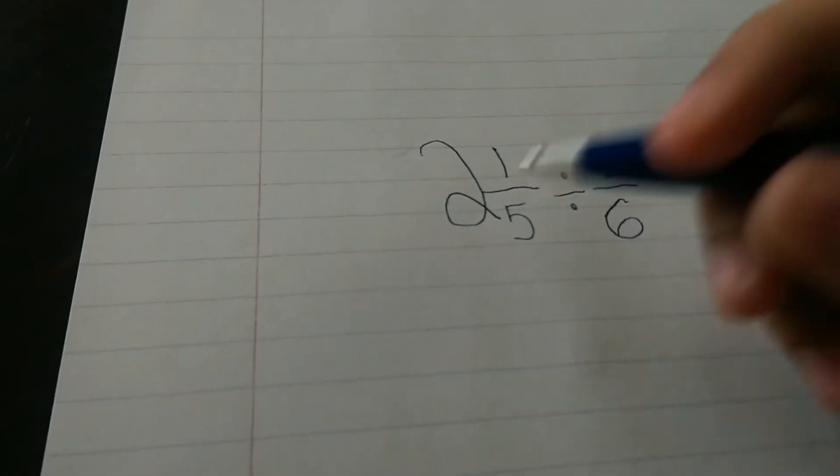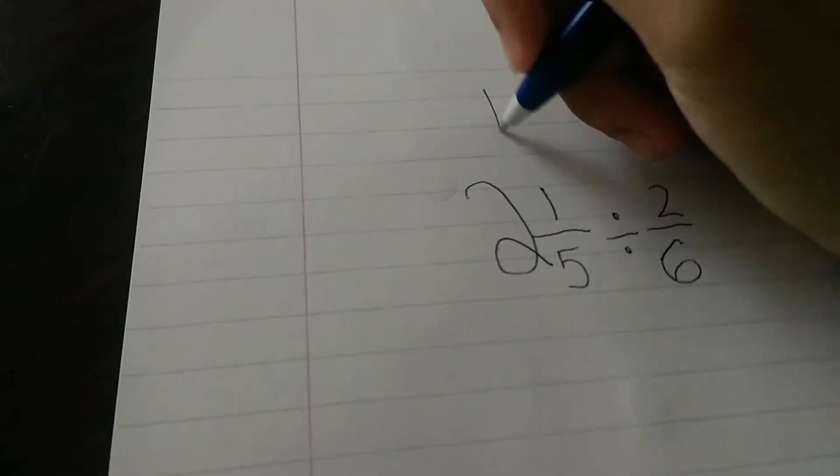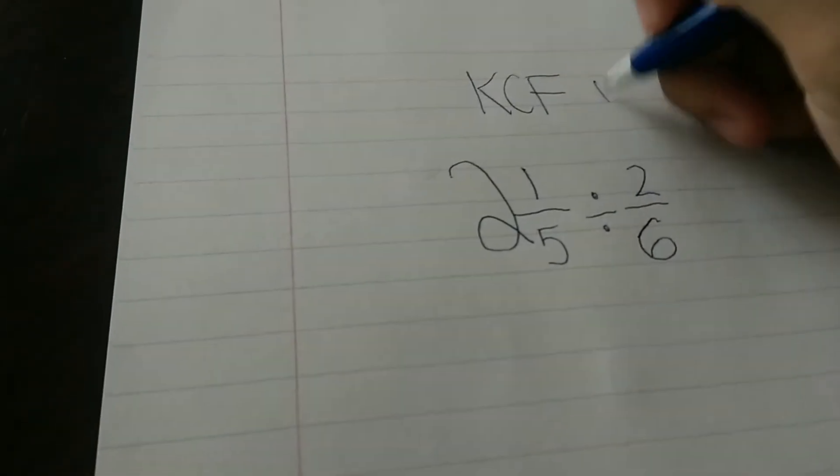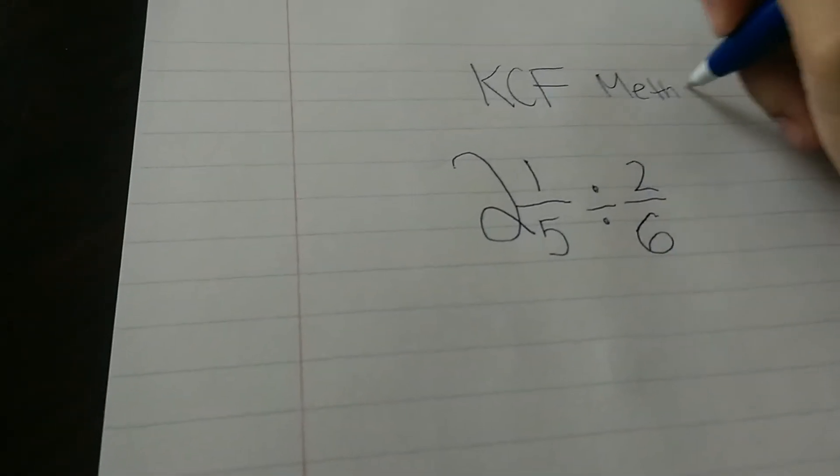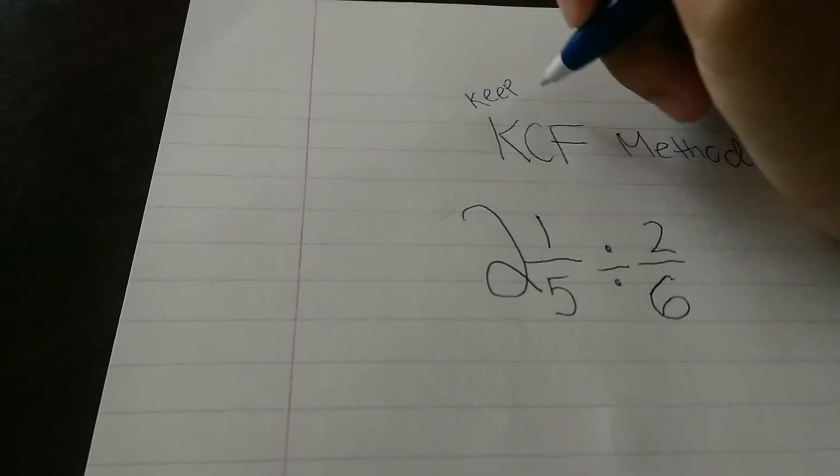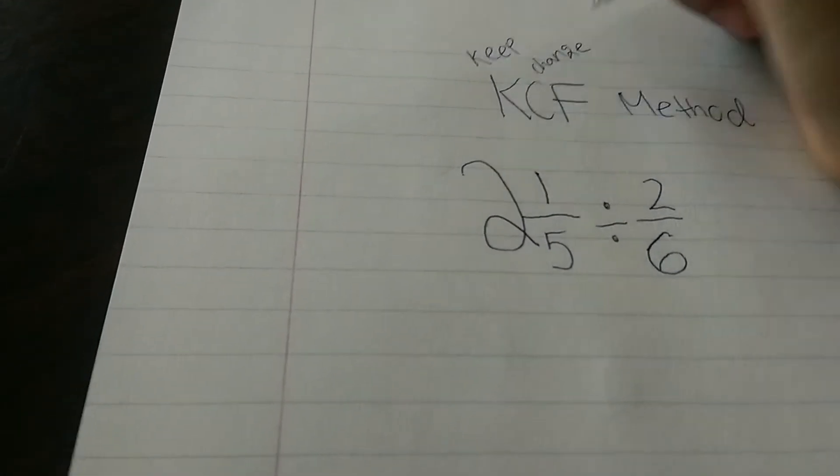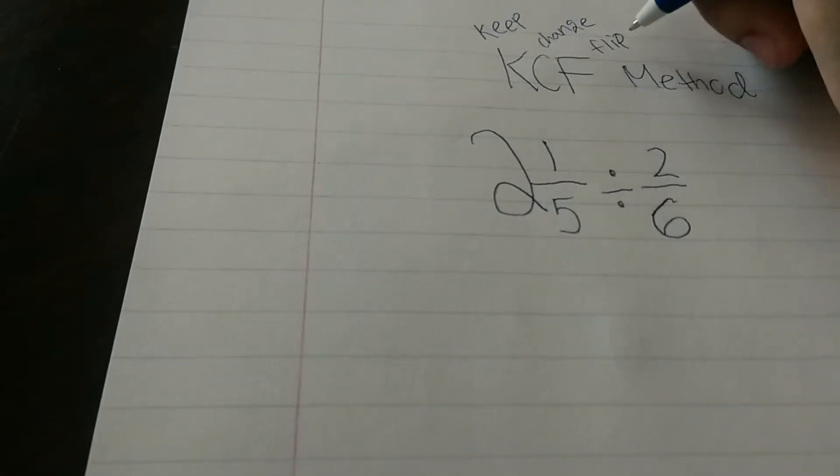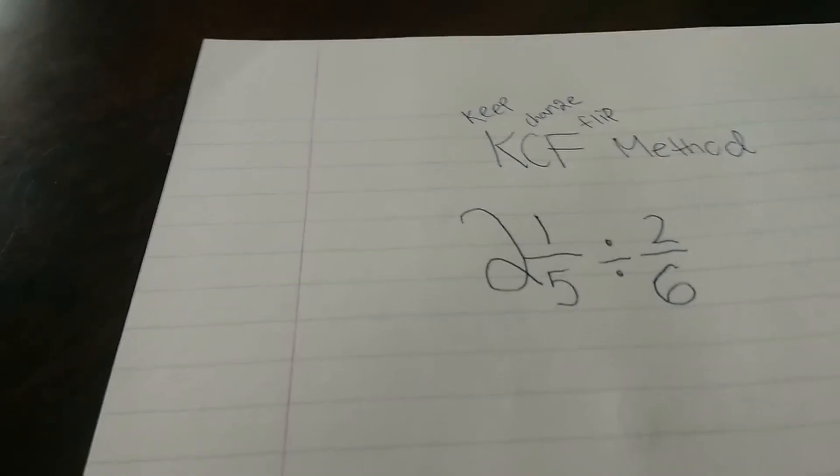Anyway, first, what you always, oh, let me show you this method first. Okay, this is called the KCF method. What that means is, this is keep, this is change, and this is flip. There we go. So, keep, change, flip.